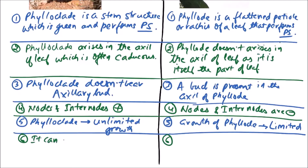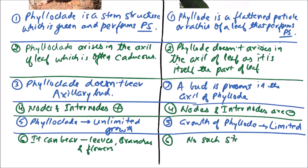Another difference is that a phylloclade can bear leaves, branches, and even flowers, while in a phyllode no such structures are present.